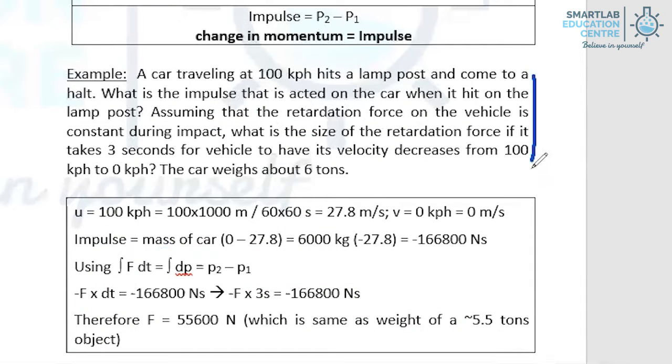So in this example here, we actually illustrate how impulse can be calculated. Impulse is the change in momentum. So it's the mass of the car. And in this context, the car is traveling at 100 kilometers per hour, but comes to a halt when you collide with a lamp post. So the final velocity is zero and the initial velocity is 27.8. And so the unit of impulse will be newton second or otherwise kilogram meter per second, like in the case of momentum.